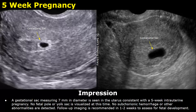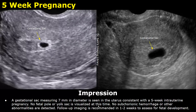This is the impression. You can write the size of the gestational sac and also mention the weeks. After that you can write no fetal pole or yolk sac is visualized at this time, no subchorionic hemorrhage or other abnormalities are detected. Follow-up imaging is recommended in one to two weeks to assess for fetal development.